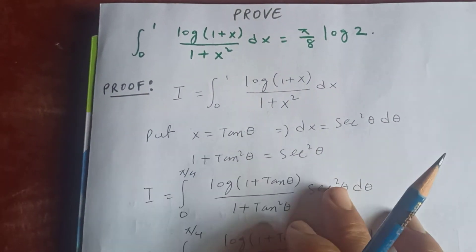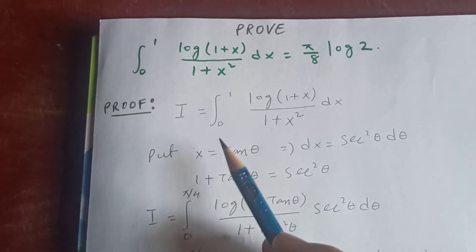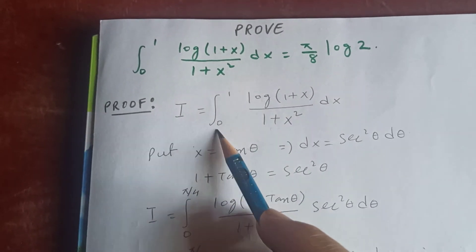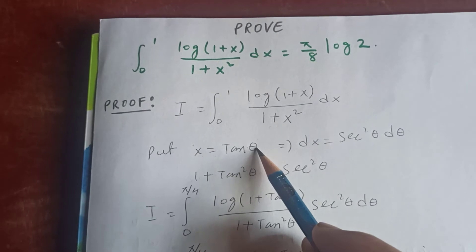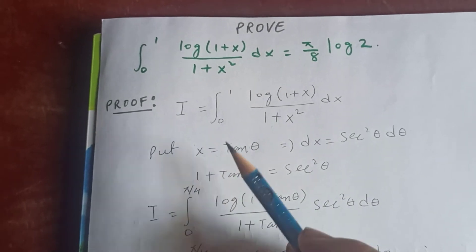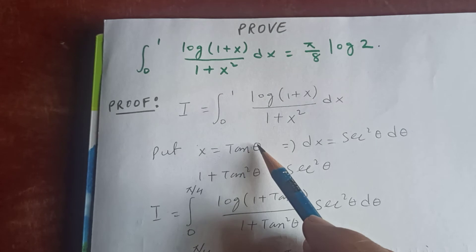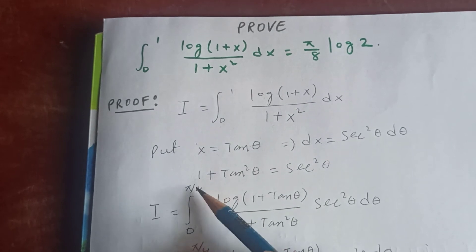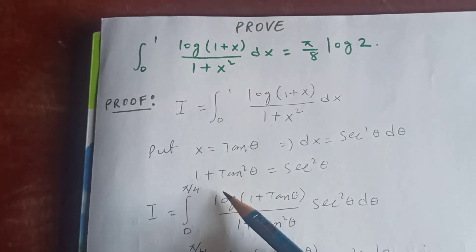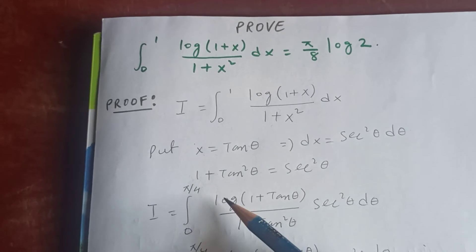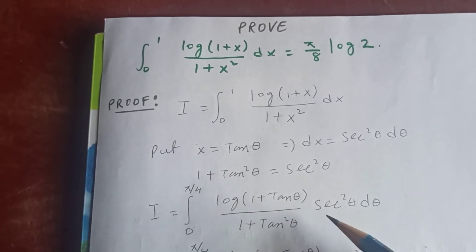Now let's apply the new limits. When x is zero, tan θ equals zero so θ is zero. When x equals one, tan θ equals one so θ equals pi/4. So I becomes the integral from zero to pi/4 of log(1 + tan θ) divided by (1 + tan² θ), times sec² θ dθ.